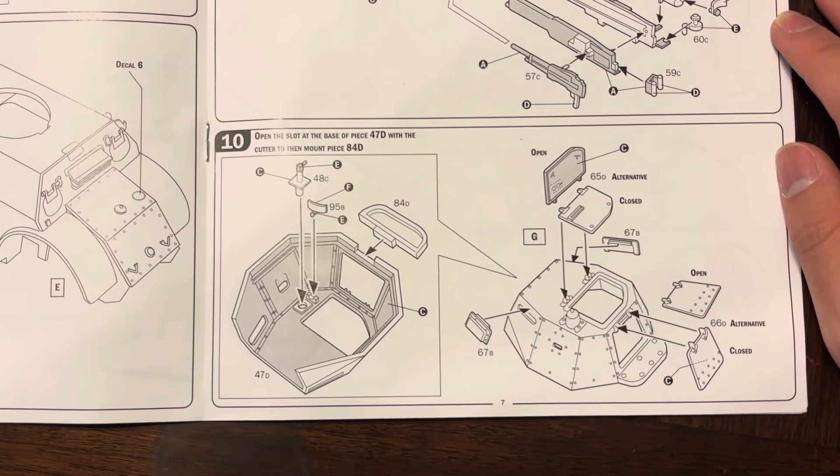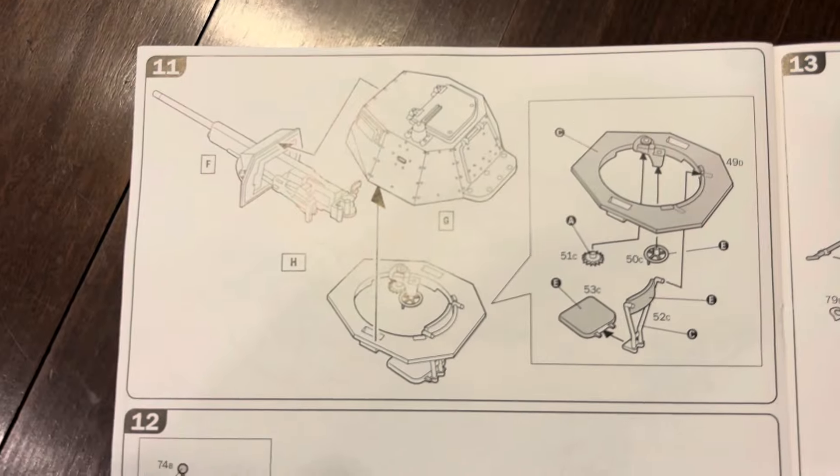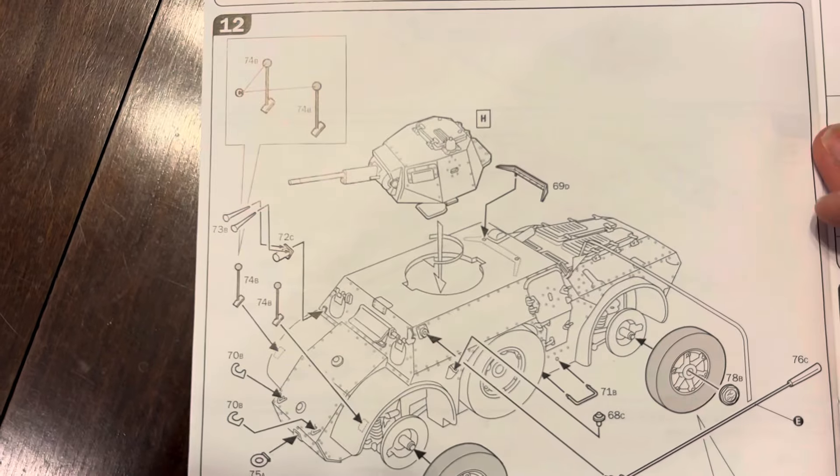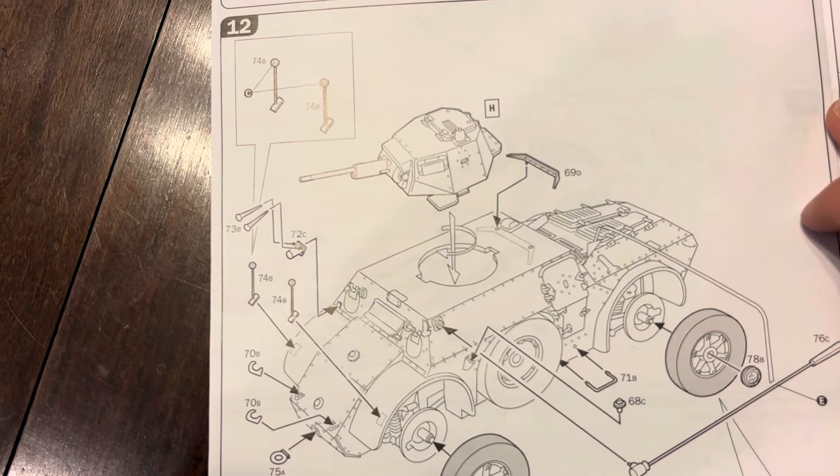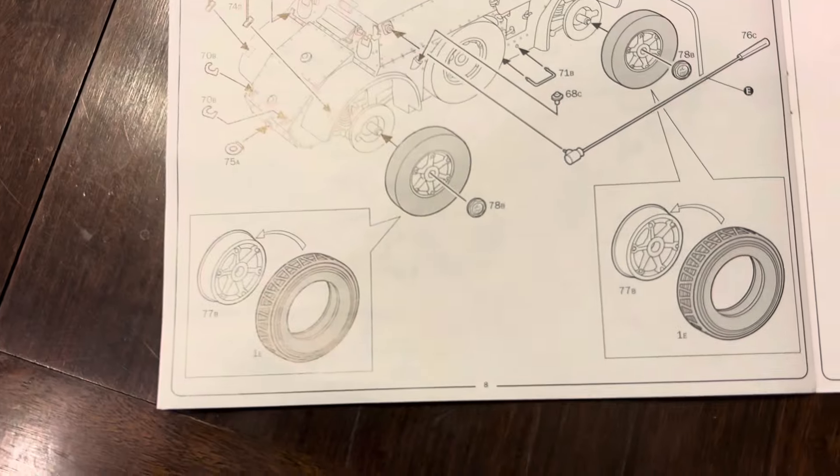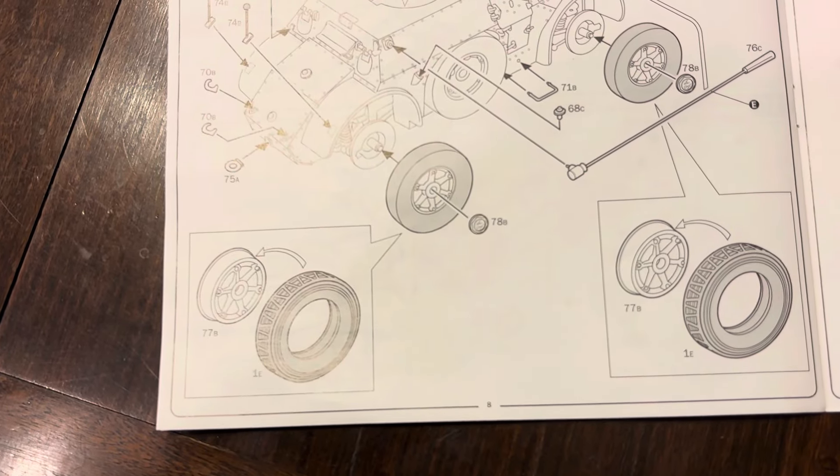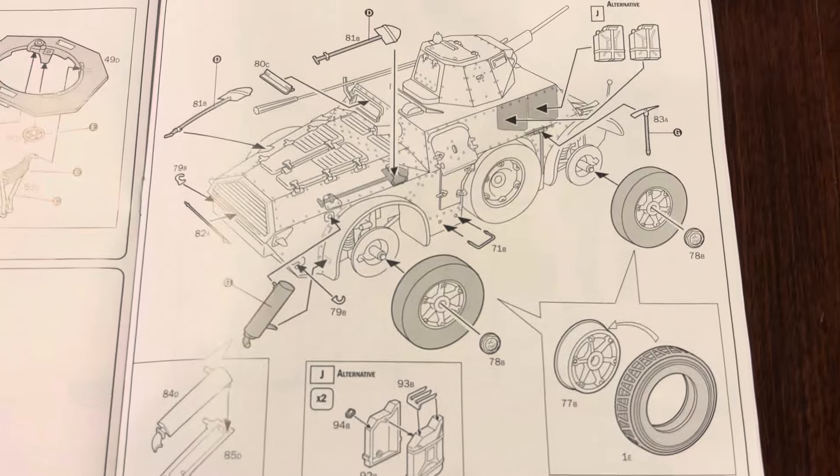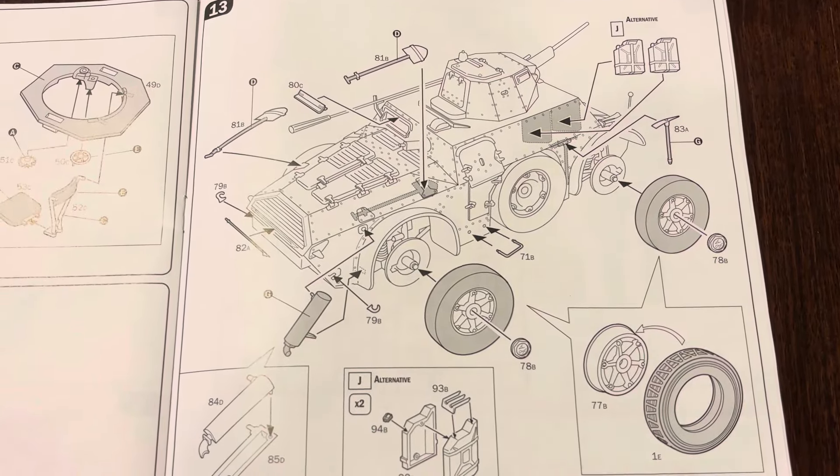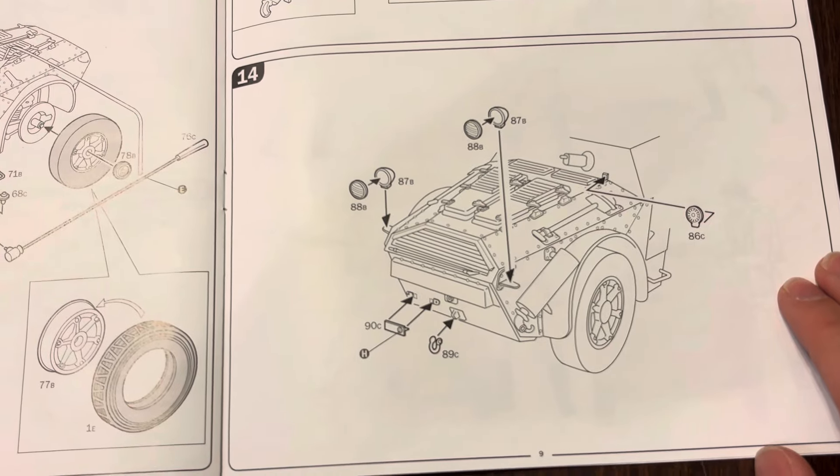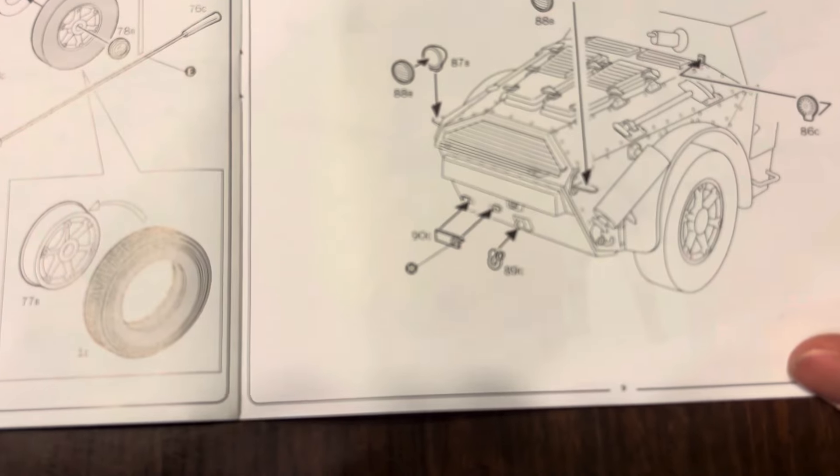Step ten is turret stuff. Step eleven is putting the turret together with nice interior detail. Step twelve is the locating brackets for the edges of the car as well as the antenna. Step thirteen adds some hooks and the tires going on with caps. The tires should be able to spin. Step fourteen is the pioneering tools along with jerry cans, muffler, and steps. The rear view shows tail lights and license plate.